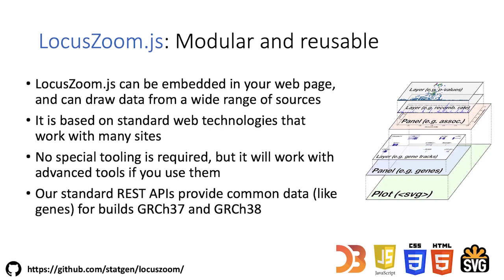On the backend, we have standard API servers that provide common data like genes for builds GRCh37 and build 38, which means you can use this on a wide range of datasets. This is a permissive open source license, so it's used in both industry and academia across a number of different sites and in-house analysis tools. We always welcome questions or contributions on getting started.